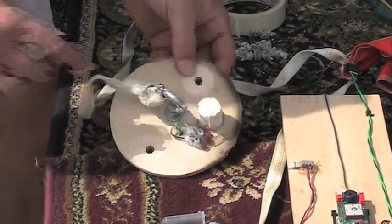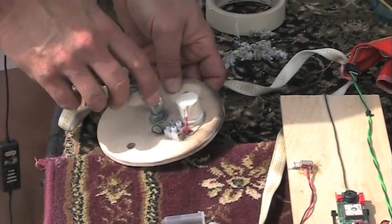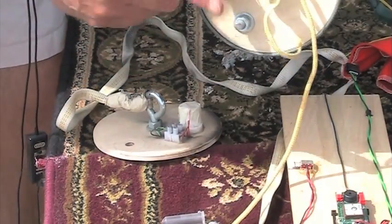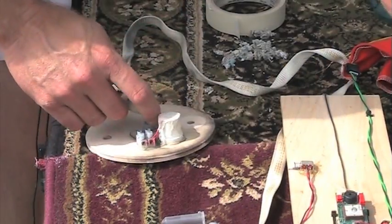All right, so now my ejection charge is in there and it's all hooked up. I've already done the other one on the other bulkhead. This is for the drogue and this one will be for the main chute.